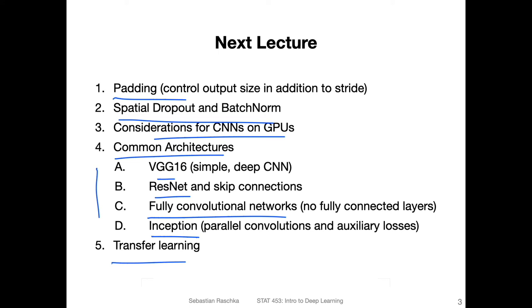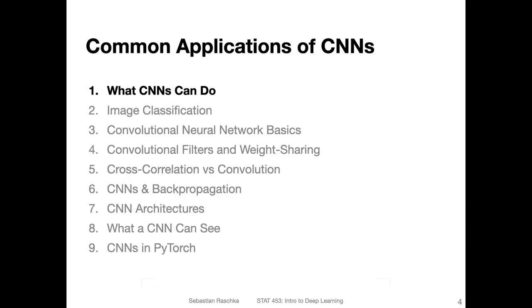I recommended transfer learning to some students in the context of your class projects. Essentially, it is training the network on a large dataset and then fine-tuning it on a smaller dataset. I noticed many students only have small datasets like 500 images, and usually it's tricky to get good performance on a small dataset. So it's sometimes helpful to pre-train on a larger dataset before fine-tuning to your target dataset. But today, we will start with the first topic: what CNNs can do.